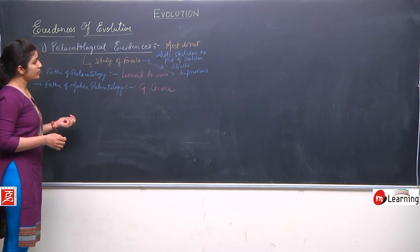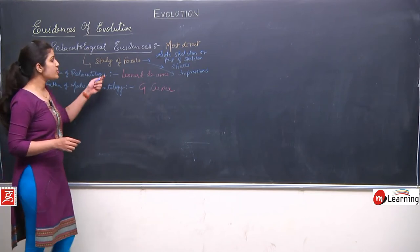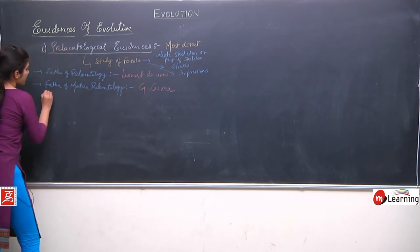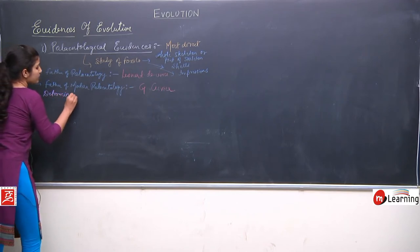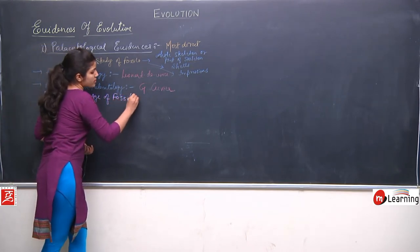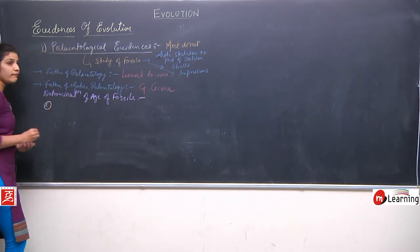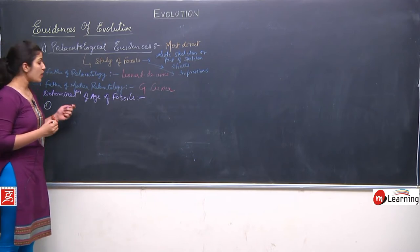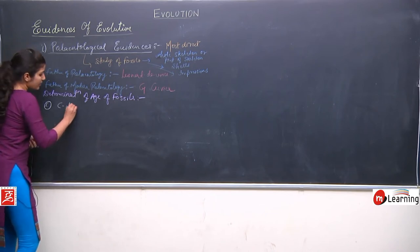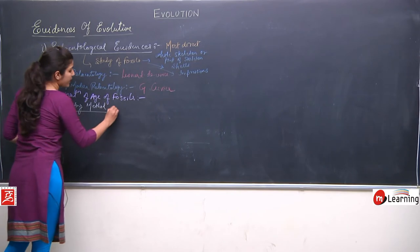The study of fossils is called paleontology. How do we determine the age of fossils? For this, scientists have developed certain methods. One well-known method is the carbon dating method.